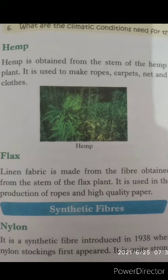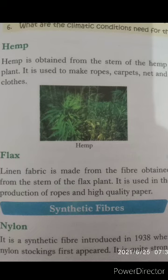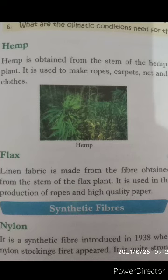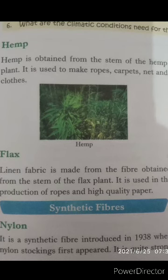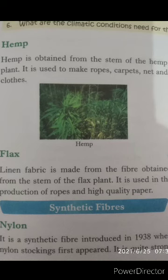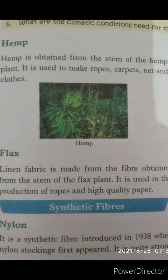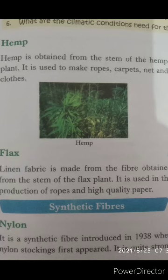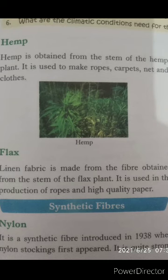Next one: hemp. Hemp is obtained from the stem of the hemp plant. It is used to make ropes, carpets, nets, and clothes. Generally ropes, carpets, nets, and clothes are made with hemp.